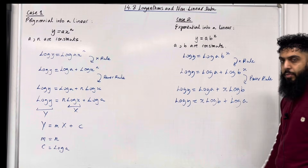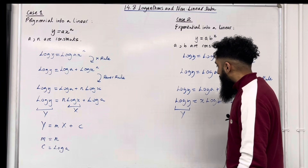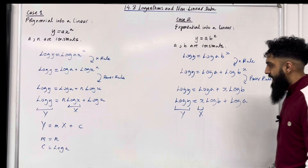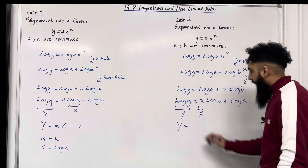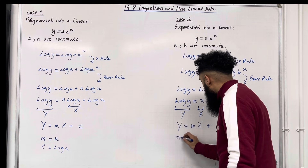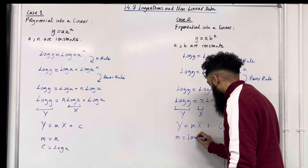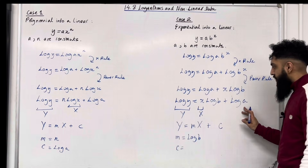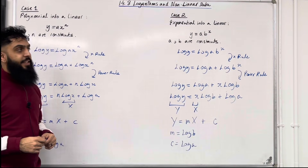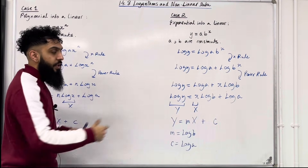In this equation, the variables are log y and x. Calling log y capital Y and x capital X, the equation becomes Y equals mX plus c. The gradient m is equal to log b, and the y-intercept c is equal to log a. That covers the two cases for transforming a non-linear function into a linear function by applying logs and using rules for logs.